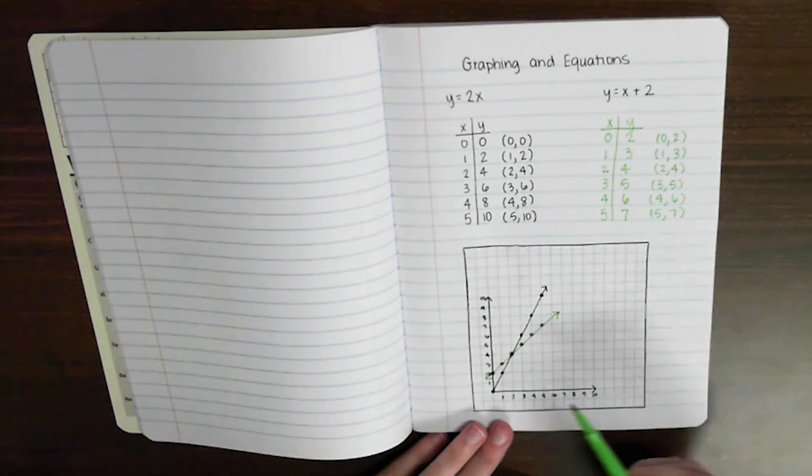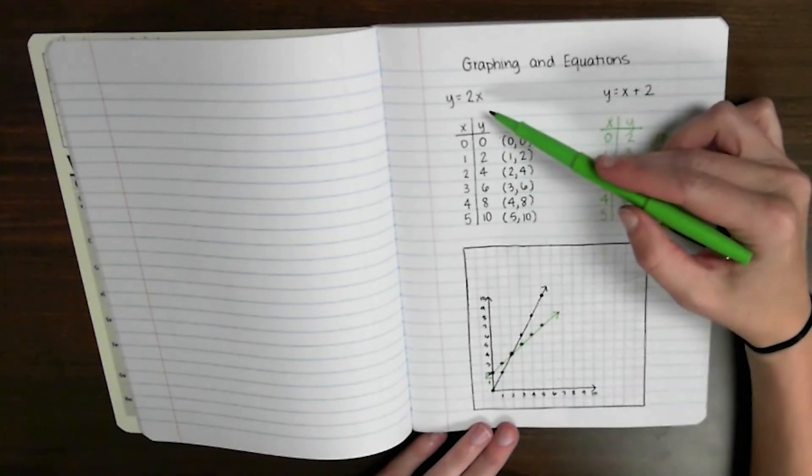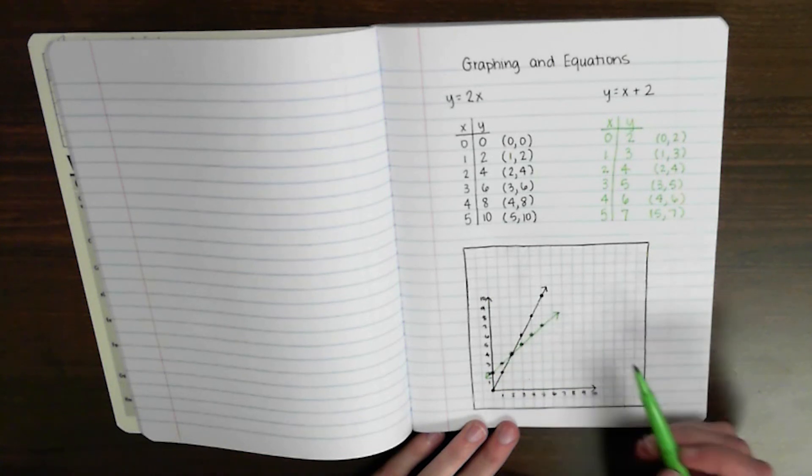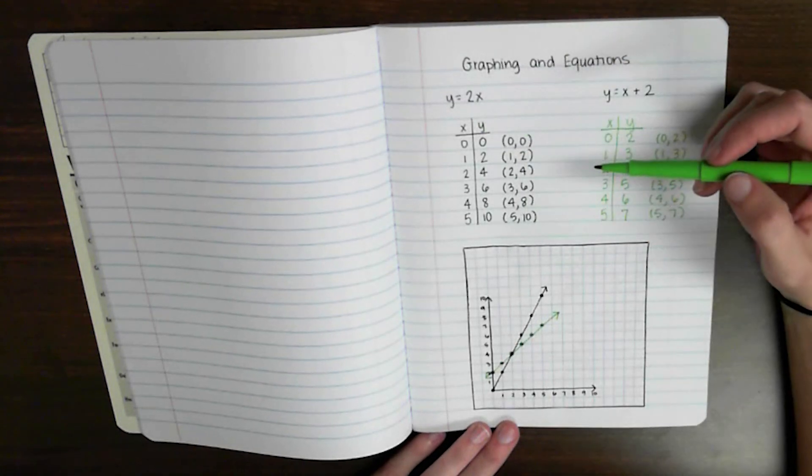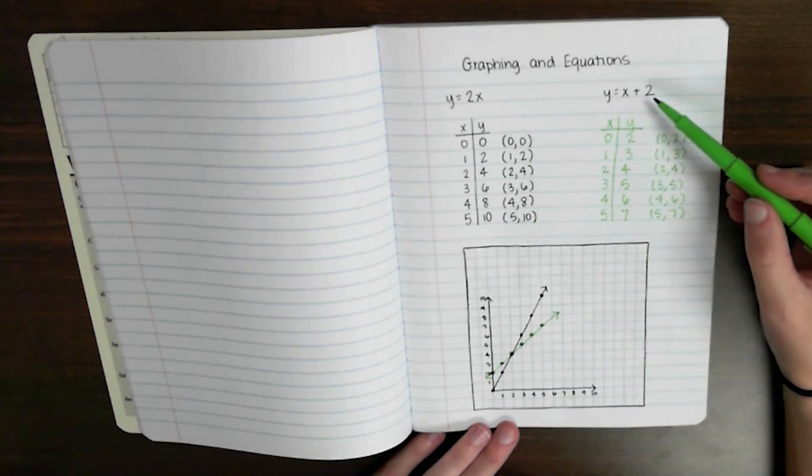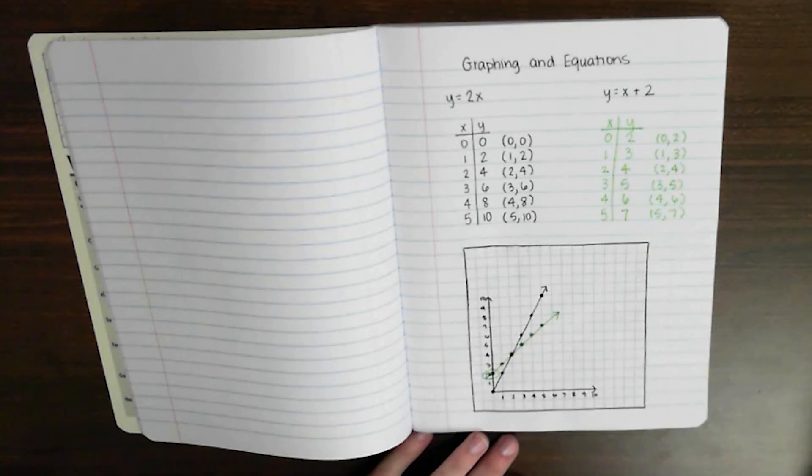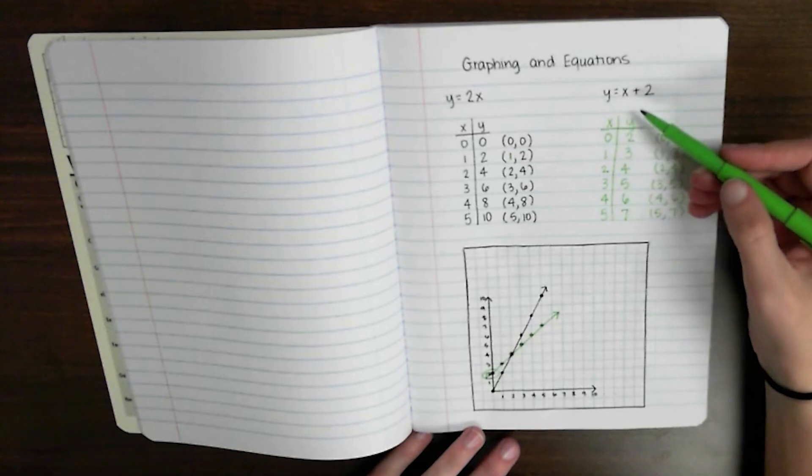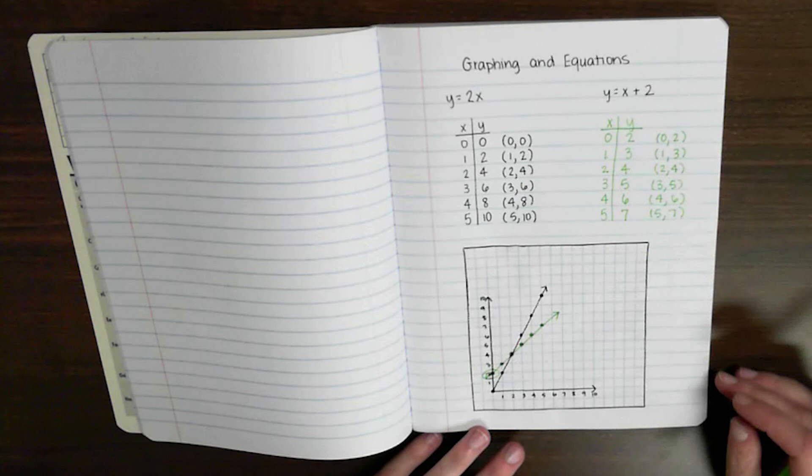So some different things to notice about this line. Instead of going over 1, up 2, over 1, up 2 like it did when I multiplied, this time it's just up, over, up, over. It always goes up by 1. So what I'm looking for is I could see the 2 when I did the multiplicative pattern. It went up 2 every time. So where is the 2 on this one? Well, the 2 is right here. I can see it crosses my y-axis right here at 2 because I said plus 2. If I was to change that to plus 3 or plus 4, maybe that would change. That's something we can explore in class.